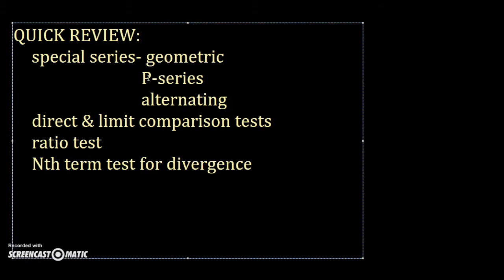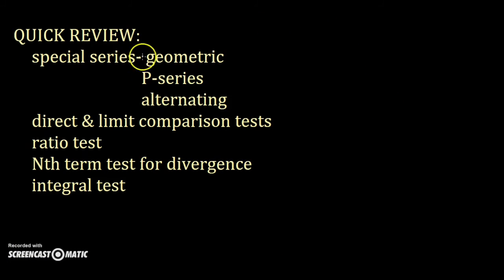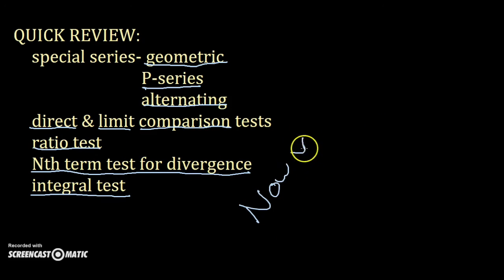So to recap all the tests for convergence we've gone over in this video. First, you should look for special series. These are geometric series, p-series, and alternating series. Then, you can try the direct or the limit comparison test if you know a similar series. There's also the ratio test, the nth term test for divergence, and the integral test. Now you know!